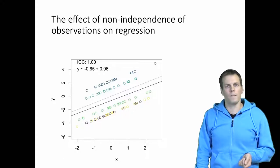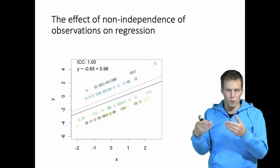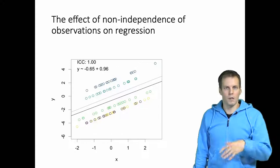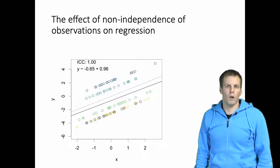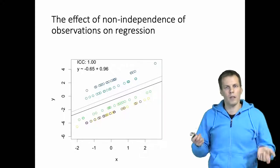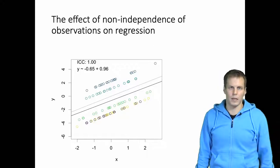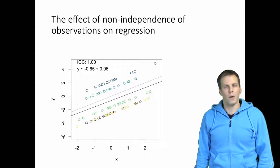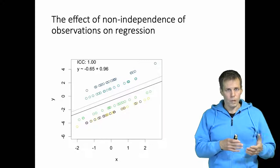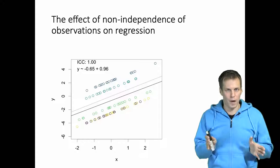Typically, if you cannot assume that the error term — the unobserved causes or sources of variation in the dependent variable — is independent, then typically your explanatory variables cannot be assumed to be independent either. So we either have the case where the error term is independent, or the scenario where both the error term and X are correlated within clusters.